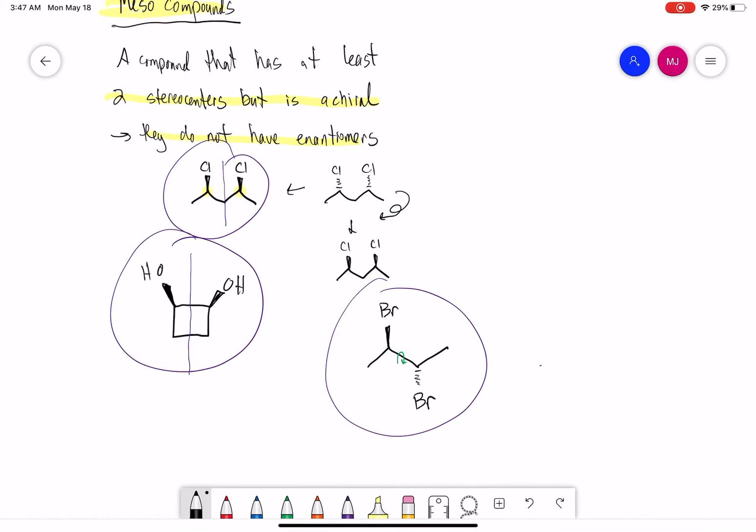By rotating that bond and moving this methyl down here, that shifts the bromine to going up. So again you can see that it has an internal plane of symmetry, so that molecule is also meso. It's really easy to see when you have an odd number of carbons in a chain.